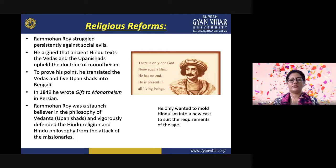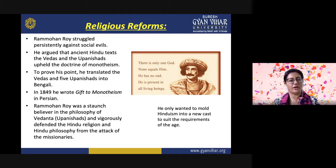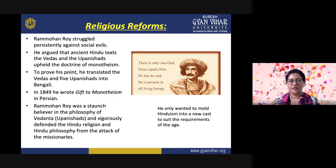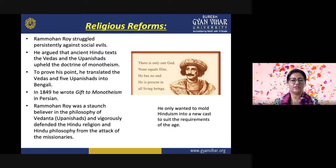Regarding religious reforms, Ram Mohan Roy argued that ancient Hindu texts — the Vedas and the Upanishads — upheld the doctrine of monotheism: the concept of only one God present everywhere. To prove his point, he translated the Vedas and five Upanishads into Bengali, and also wrote a book called Gift to Monotheism in 1849 in Persian, expressing his belief in one unlimited God present in all living beings. Ram Mohan Roy was a staunch believer in the philosophy of Vedanta and the Upanishads, and vigorously defended Hindu religion and philosophy from missionary attacks. He wanted to mold Hinduism into a new form to suit the requirements of the age.